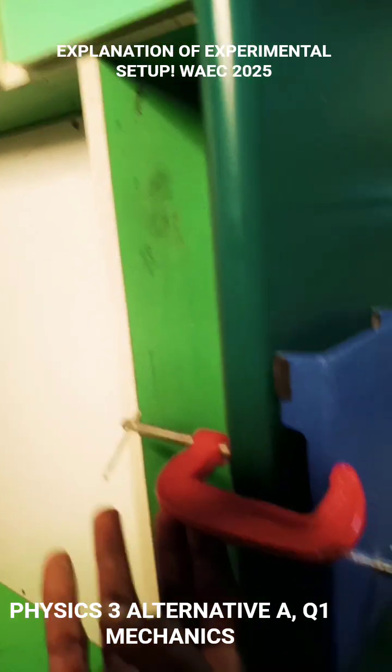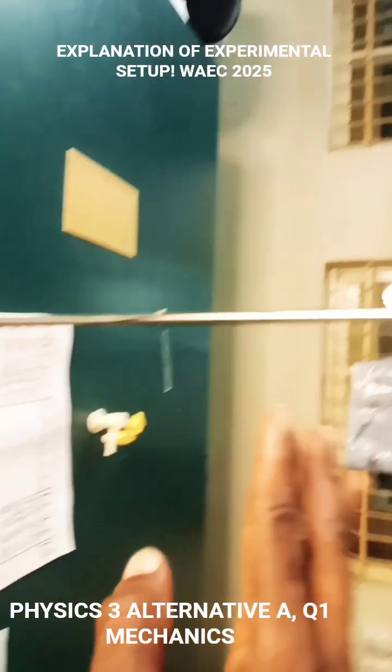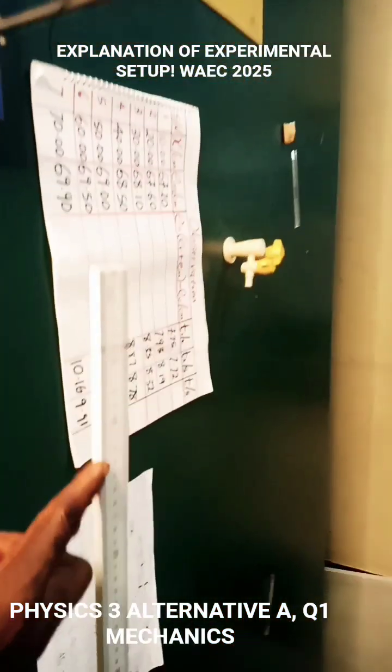This is the G clamp, the retort stand, the first retort stand, and the first meter rule.